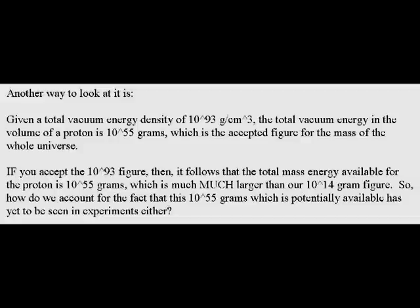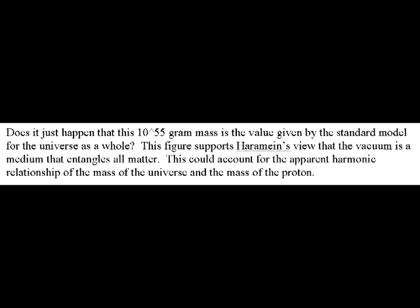Another way to look at it is: given a total vacuum energy density of 10 to the 93 grams per centimeter cubed, the total vacuum energy in the volume of a proton is 10 to the 55th grams, which is the accepted figure for the mass of the whole universe. If you accept this 10 to the 93 figure, then it follows that the total mass energy available for the proton is 10 to the 55th grams, which is much, much larger than our 10 to the 14th gram figure. So how do we account for the fact that this 10 to the 55th grams, which is potentially available, has yet to be seen in experiments either? Does it just happen that this 10 to the 55th gram mass is the value given by the standard model for the universe as a whole? This figure supports Haramein's view that the vacuum is a medium that entangles all matter, and could account for the apparent harmonic relationship of the mass of the universe and the mass of the proton.